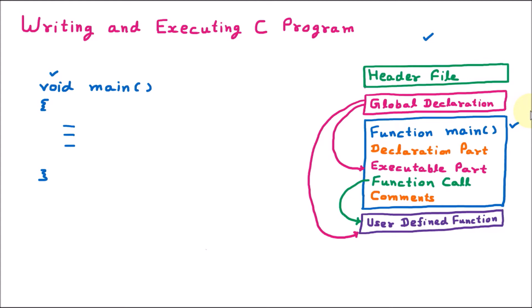Void main means this main is not returning anything. But in some books you will find that it is int main. If you are applying int here, then main is a driving function and int is the return type. So this function is going to return the integer type. Whenever you are providing int here, it is compulsory that you provide the return statement.